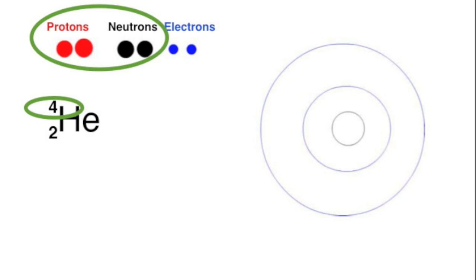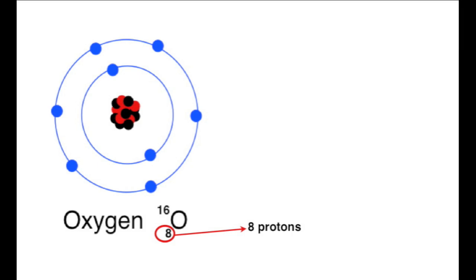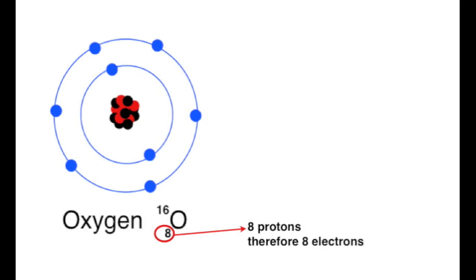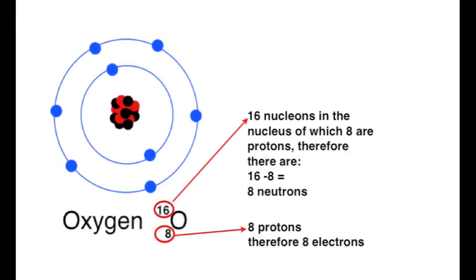We look at this information with a couple more examples. The oxygen atom shown here has eight protons in its nucleus and therefore must have eight electrons. The nucleon number is 16. Since eight of those are protons, the other eight must be neutrons.